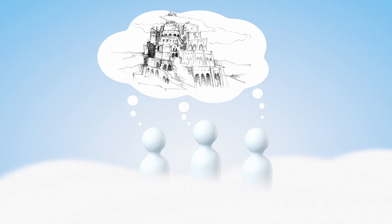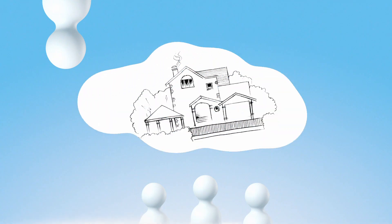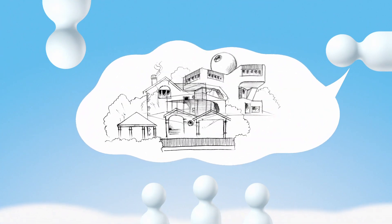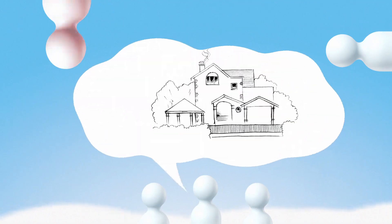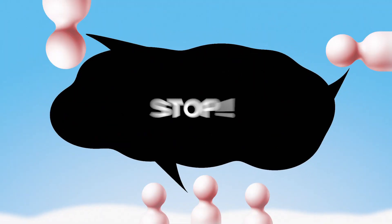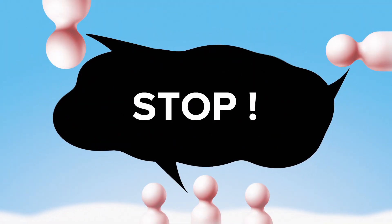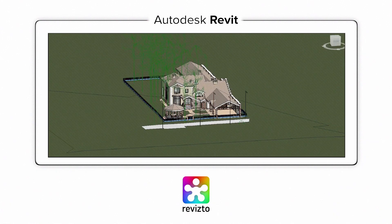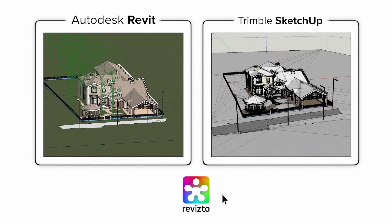Real collaboration can be possible if everyone speaks a common visual language, even those without design backgrounds. So we need a visual environment to help design and build sustainable projects. The solution is Revisto, a simple cloud-based collaboration software for Autodesk Revit and Trimble SketchUp.